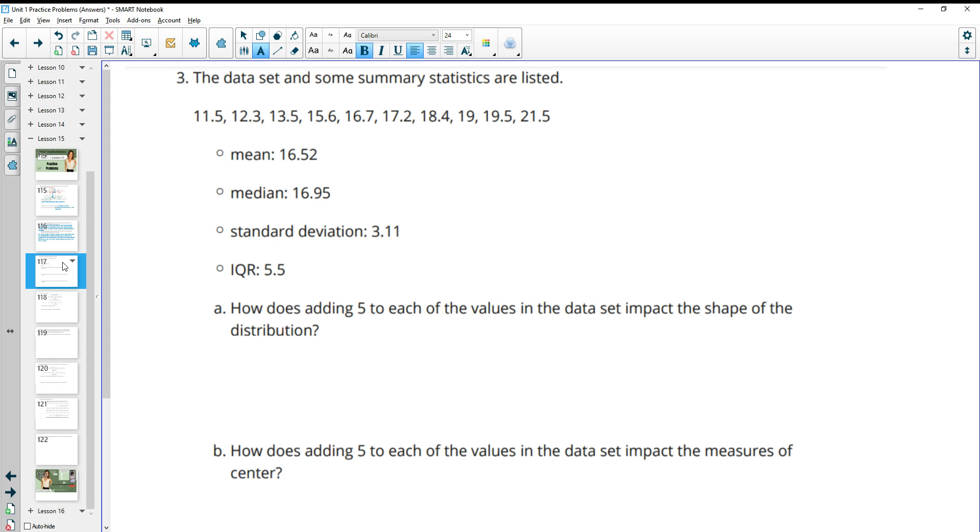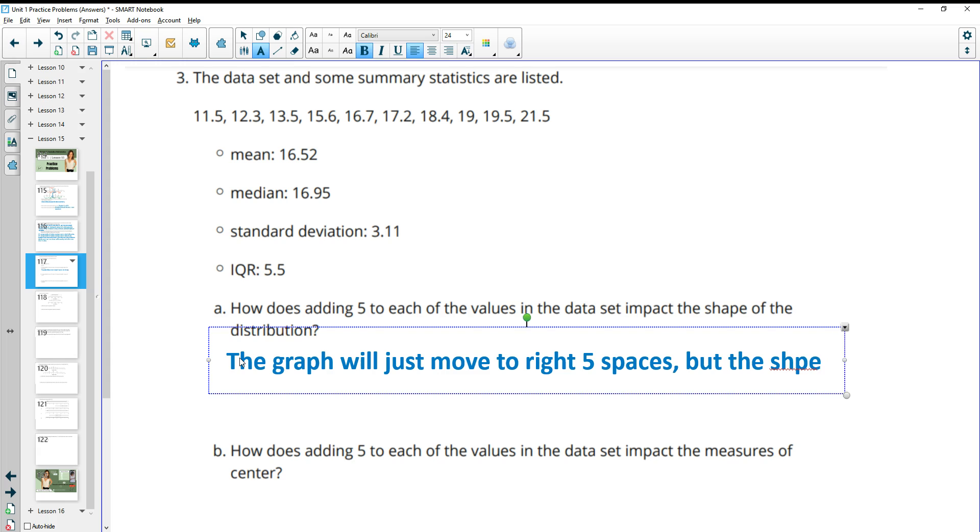Number three, the data set and some summary statistics are listed. And so you can see the mean, the median, the standard deviation and the interquartile range. How does adding five to every value in the data set impact the shape of the distribution? So hopefully you can answer this without making a dot plot of this. However, if you don't know the answer to this, you could certainly make a dot plot of this data and then add five to every data point and look to check yourself. But if we add five to every value, the graph will just move to the right on our number line five spaces, but the shape won't change.